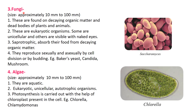Now, fungi. Their size is approximately 10 mm to 100 mm. These are found on decaying organic matter and dead bodies of plants and animals. As fungi are saprotrophic, they are found on decaying organic matter. These are eukaryotic organisms - they have a distinct nucleus and nuclear membrane. Some are unicellular and others are visible with naked eyes. Saprotrophic fungi absorb their food from decaying organic matter. They reproduce sexually by cell division and asexually by budding.